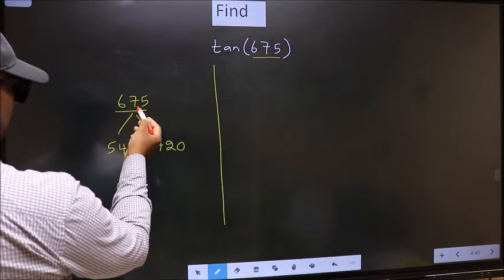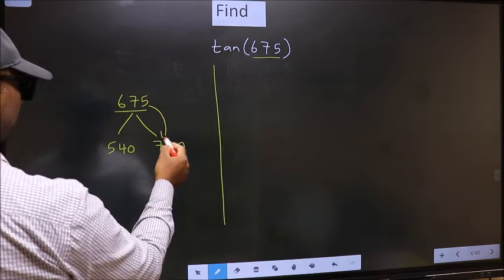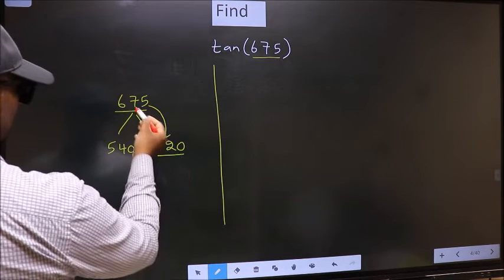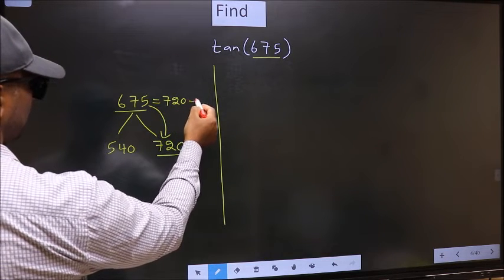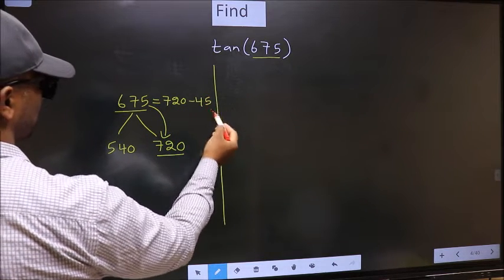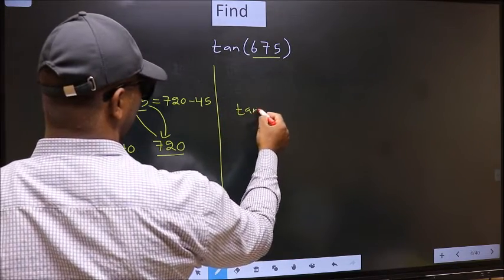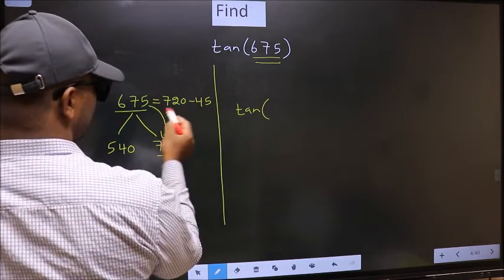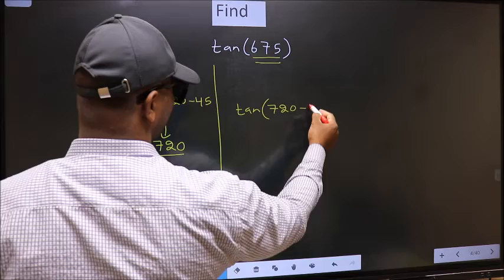Next, 675 is close to which number? This is close to 720. So, in place of 675, now we should write 720 minus 45. So, this will become tan. In place of this, now we write 720 minus 45.